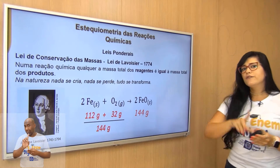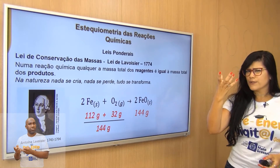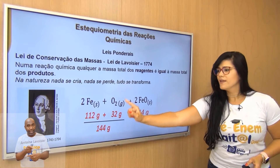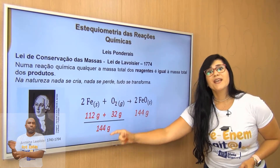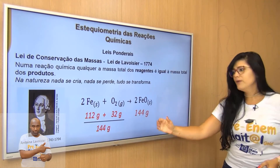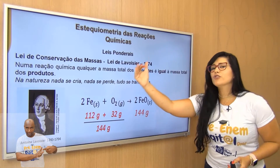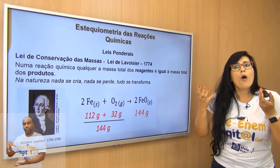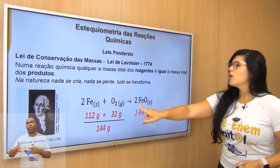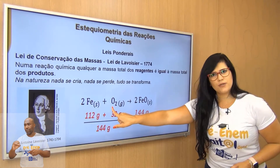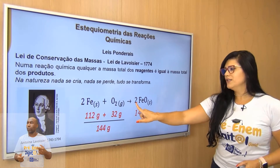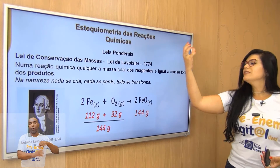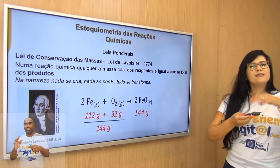Observando essa reação de formação do óxido de ferro: antes da seta, 112 gramas de ferro reagindo com 32 gramas de O₂ — total de 144 gramas. No final, foram produzidos 144 gramas de óxido de ferro. A quantidade em átomos antes do reagente é a mesma no final dos produtos: 2 ferros no início e 2 no final; 2 oxigênios no início e 2 no final. Isso é a lei de Lavoisier — conservação das massas.